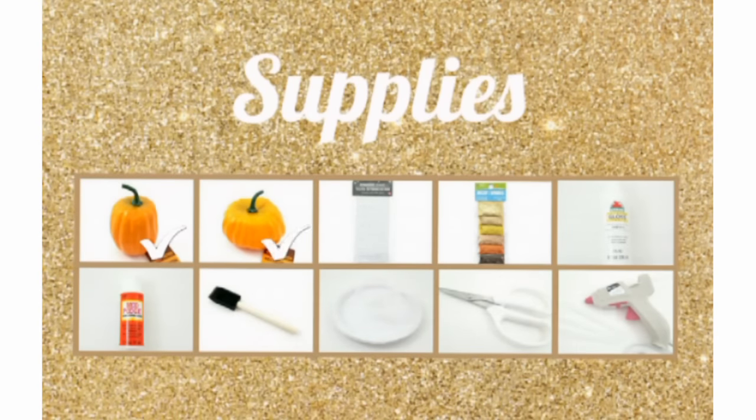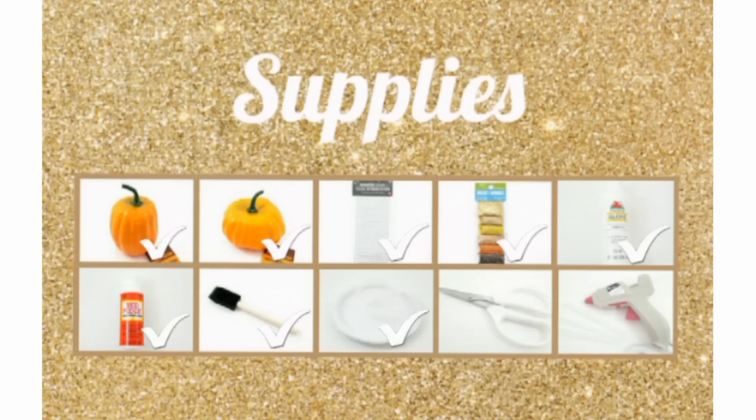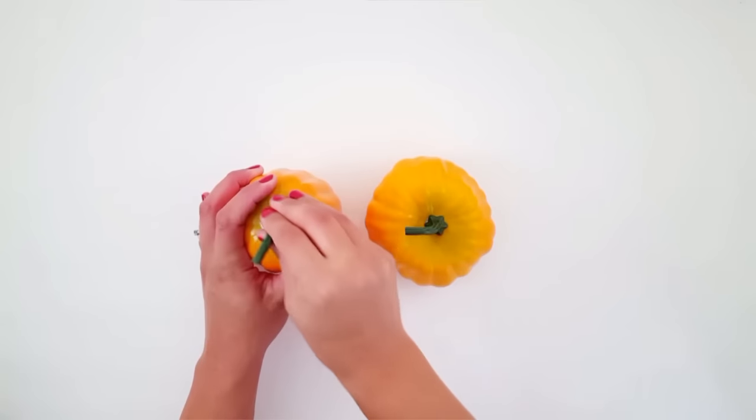A narrow pumpkin, a round pumpkin, a sheet of rhinestone stickers, some packets of glitter, some white paint, some Modge Podge, a foam brush, a paper plate and a little cup, a pair of scissors, as well as a hot glue gun and some glue sticks.